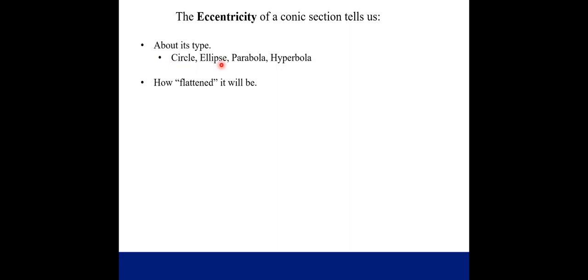What this eccentricity number tells us is mainly two things about the type of the conic section we have, whether it be a circle, ellipse, parabola, or hyperbola, and how flattened it might be or look like. And real quick, just to note, a circle is just a special case of an ellipse.